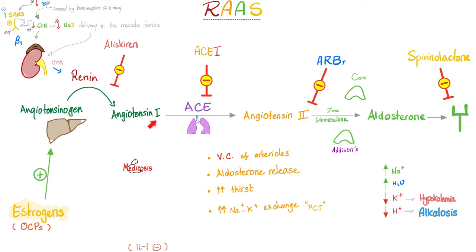Renin converts angiotensinogen from the liver into angiotensin 1. Angiotensin 1, via angiotensin-converting enzyme in the lungs, is converted to angiotensin 2. Angiotensin 2 has two functions: first, it constricts blood vessels to raise blood pressure. Second, it signals the adrenal cortex — specifically the zona glomerulosa — to produce aldosterone, so that aldosterone can reabsorb salt and water, further raising blood pressure back to normal.